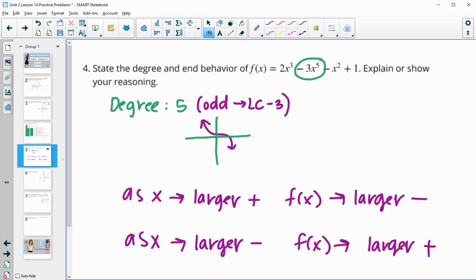This means as x goes to the right side of our graph—as our x's are getting bigger positive—our y's are getting bigger negative, meaning the graph is pointing down. On the right side, it's pointing down. On the left side, the y's are pointing up.